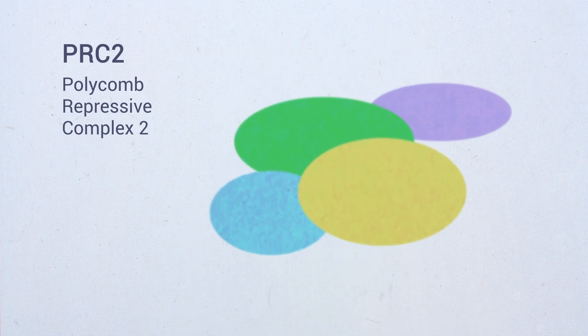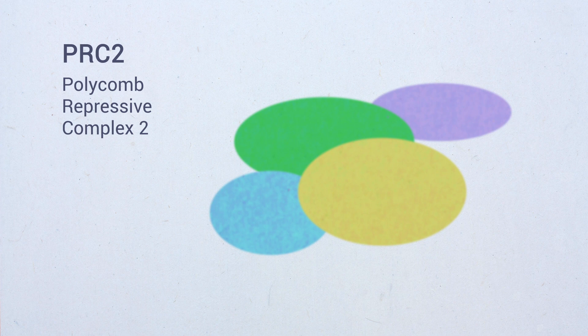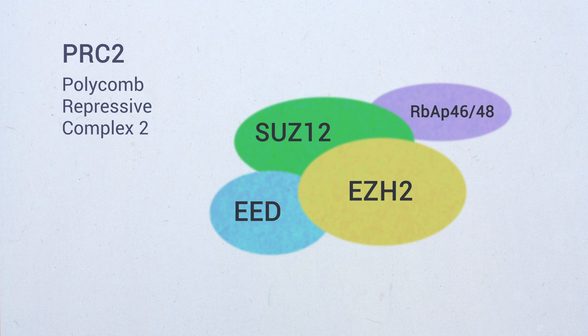PRC2 consists of four core proteins: EZH2, EED, SUZ12, and RBAP46/48.